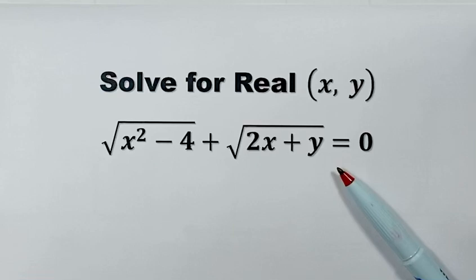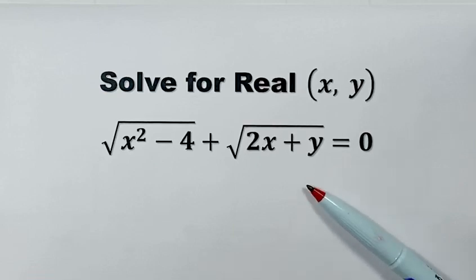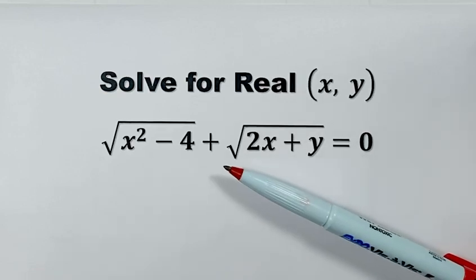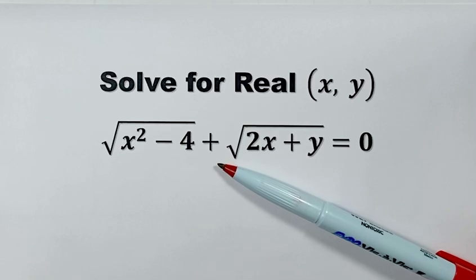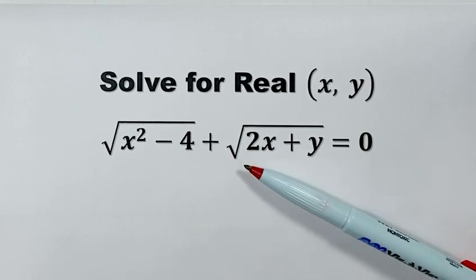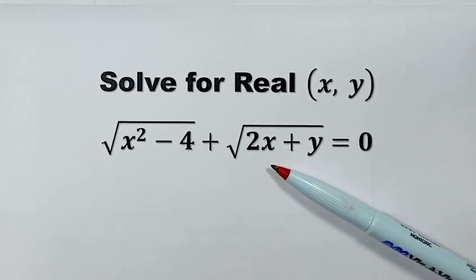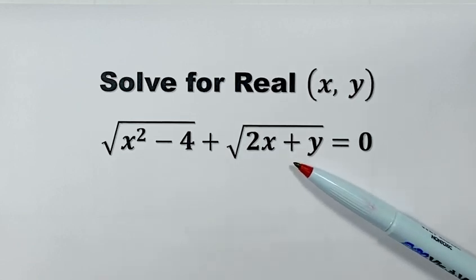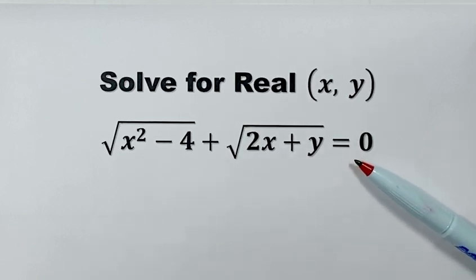Hello everyone, here's a question. Solve the equation: the square root of x squared minus 4, plus the square root of 2x plus y, equals 0.